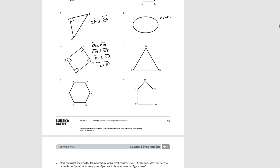Try F, G, and H. For F, we have none — none of those angles are right angles, so we don't have any perpendicular lines. For G, there's none either, because there are no right angles and therefore no perpendicular lines. For H, we have a right angle here, a right angle here, and a right angle here. So YU is perpendicular to UV. VW is perpendicular to WX. And WX is perpendicular to YX.